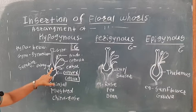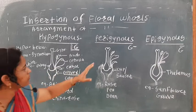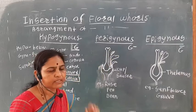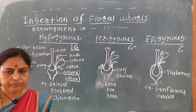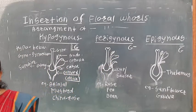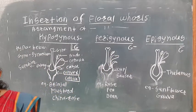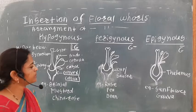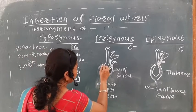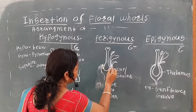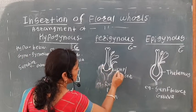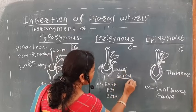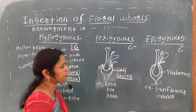The next type of flower is the perigynous flower. In the perigynous flower, if we look at the thalamus, this thalamus is cup-shaped or saucer-shaped.